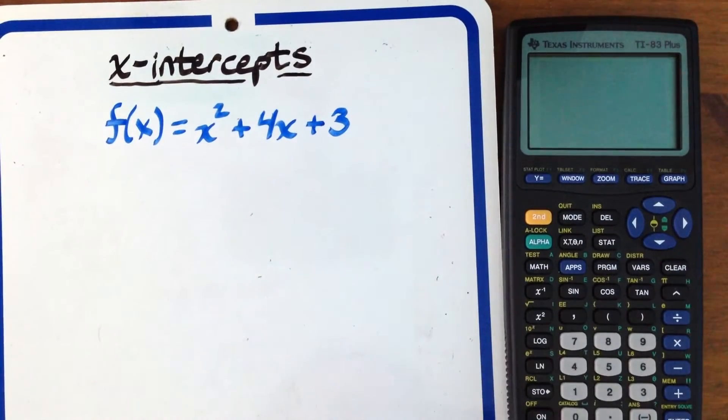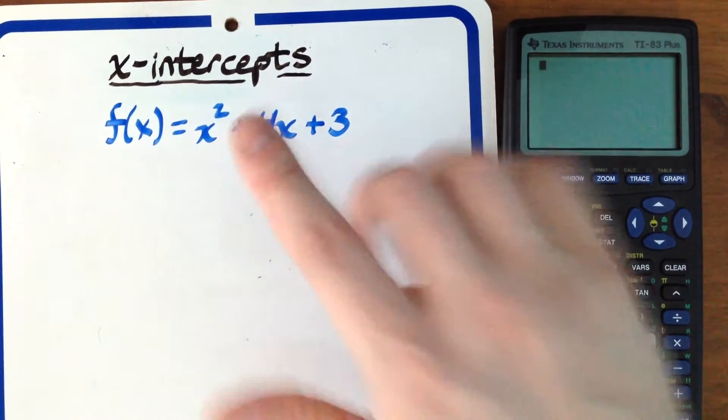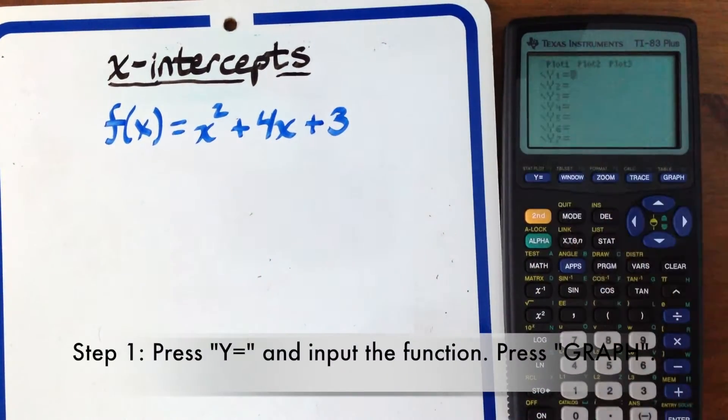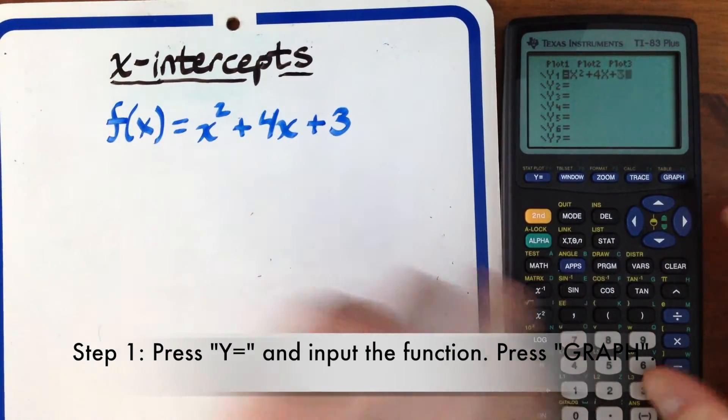To find the x-intercepts, first you'll want to input the function into the graphing calculator. Hit Y=, and then write x squared plus 4x plus 3.